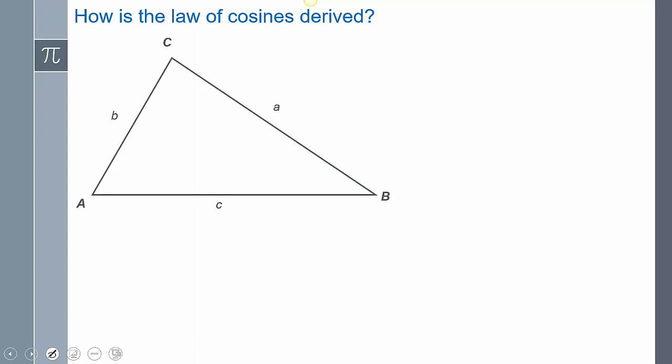Now how do we derive it? Well, we're going to basically use that same oblique triangle, and I'm going to draw down my altitude h. And what we're going to do is I'm going to say that this is x. And so that means the remaining on this other piece is going to be c minus x.